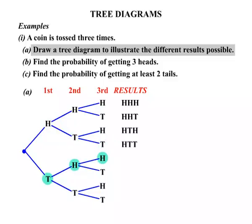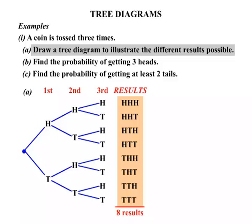Now jumping down here, a tail then two heads. Tail, head, tail. Tail, tail, head. And finally three tails. So they are all our different results. There are eight of them. Eight different results there.